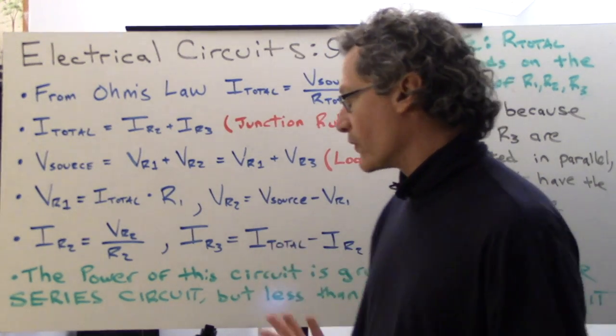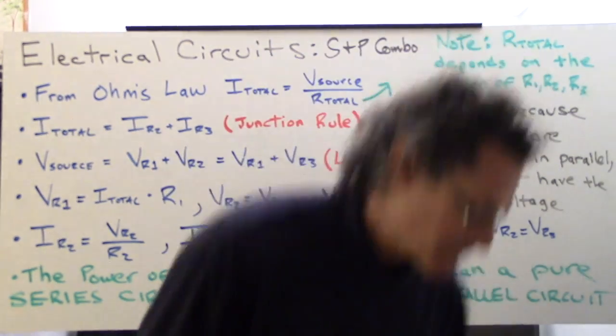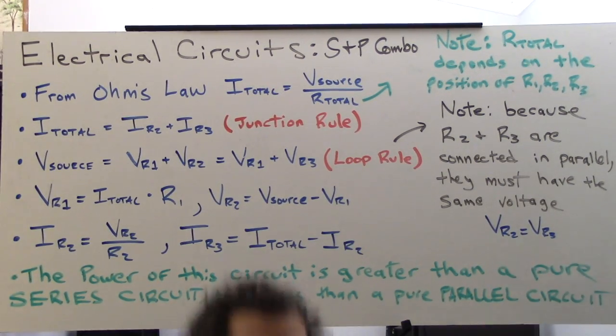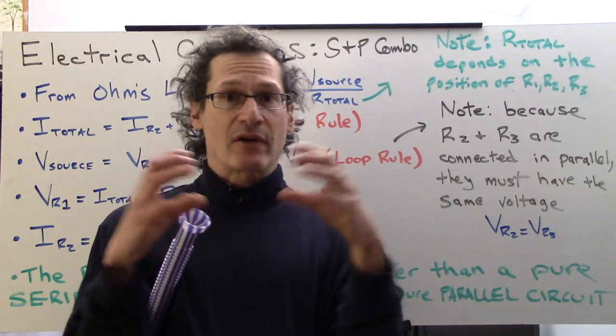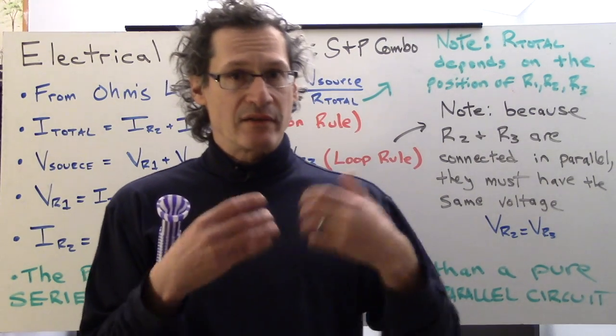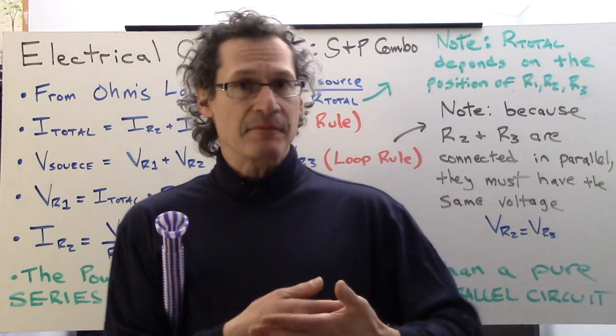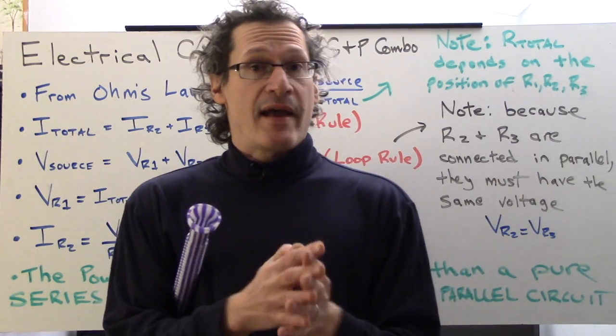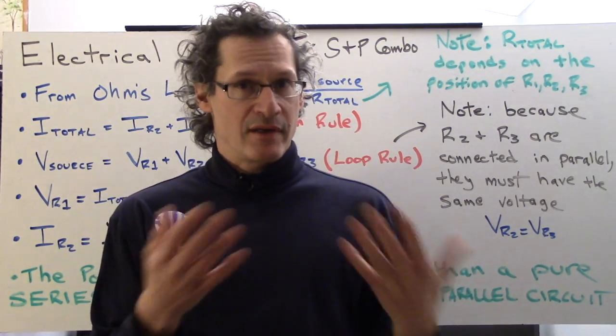So one thing that we should also note is the power of this circuit. The power of this circuit is greater than a pure series circuit. The series circuit has very little power because each of those resistors is trying to limit the current to the lowest it can, and when they're all connected in a row in a series, they have the lowest power in that circuit.